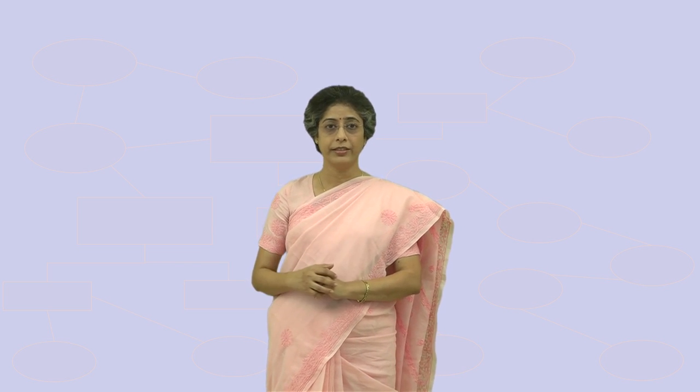After we identify strengths and weaknesses of all components, the relationship between all these components needs to be planned, designed, and drawn by the system developer. Identify all components and connect all human and non-human components to each other. Note that some components are not directly related.